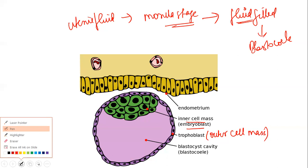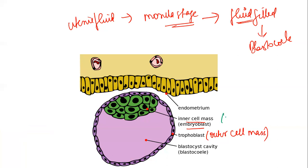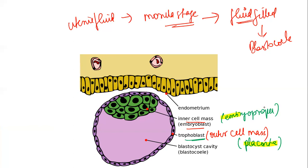The embryoblast gives rise to the embryo proper — all the structures we will study arise from this inner cell mass. The outer cell mass, the trophoblast (also called e-trophoblast), will develop into the future placenta. It attaches to the uterine wall during implantation and gives rise to the placenta. Important MCQ: fate of trophoblast and fate of embryoblast.